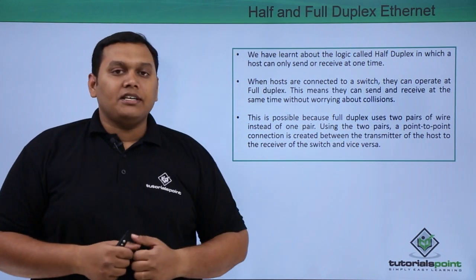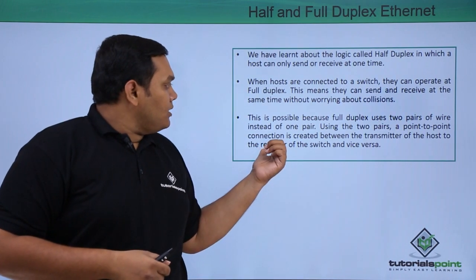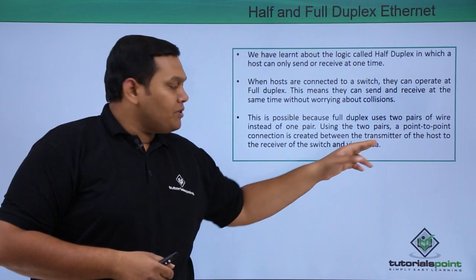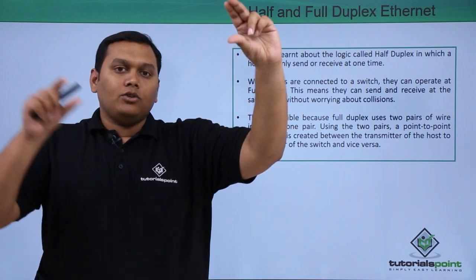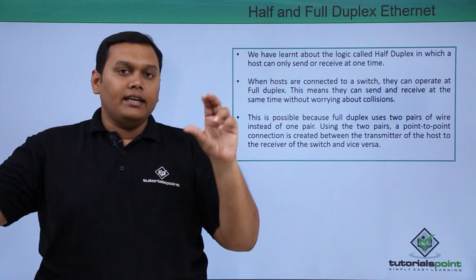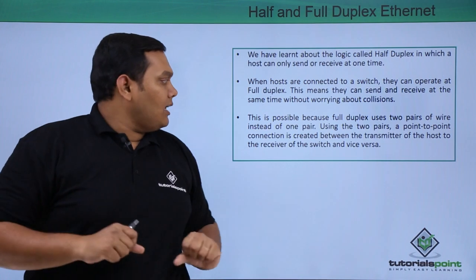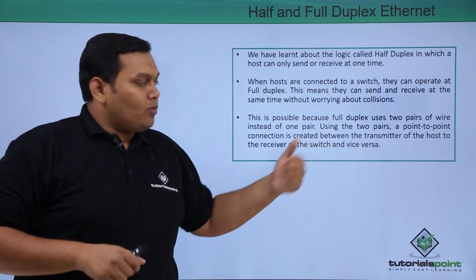And using these two pairs, a point-to-point connection is created between the switch and the other host, where the transmitter at one end is connected to the receiver at the other end, and the receiver at one end is connected to the transmitter at the other end of the switch, and vice versa.